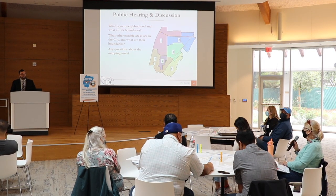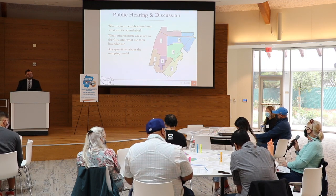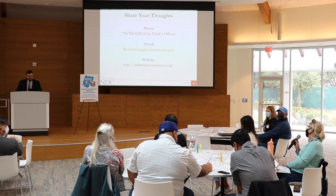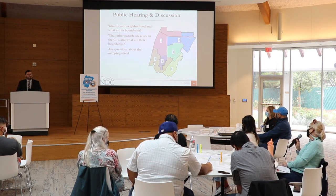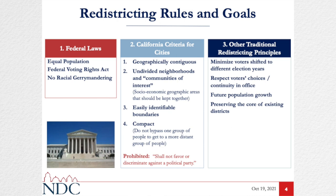Q: Thank you for all the materials. Can you explain what is the process on your end of sorting through all of our ideas? How do you determine if our ideas are valid, and how does that get to the city council? Also, the second column — undivided neighborhoods and communities of interest — is that in a law, in a government code? I think it's very important, particularly in Costa Mesa where I don't want to divide up our communities. But is that a law?